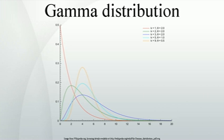Random generation of gamma variates is discussed in detail by Devroye, noting that none are uniformly fast for all shape parameters. For small values of the shape parameter, the algorithms are often not valid. For arbitrary values of the shape parameter, one can apply the Ahrens and Dieter acceptance rejection method algorithm GD or transformation method when 0 less than k less than 1. Also see Cheng and Feast algorithm GD or Marsaglia's squeeze method.